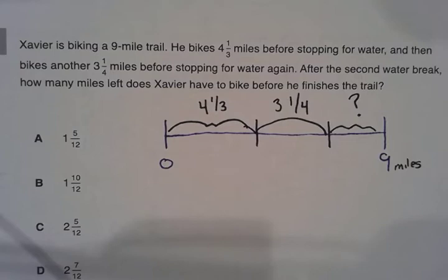Xavier is biking a nine-mile trail. He bikes four and one-third miles before stopping for water and then bikes another three and one-fourth miles before stopping for water again. After the second water break, how many miles does Xavier have to bike before he finishes the trail?